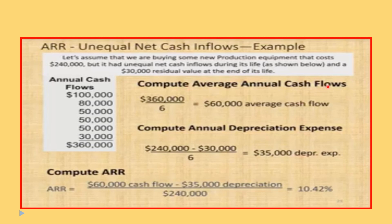First, compute the average annual cash flows. To do that, you add all of them up and divide by the number of years to find the average. If it's an annuity, you wouldn't need to find the average because the average would be the same as the annuity. The method itself would still be the same.